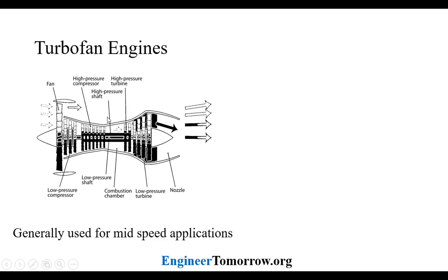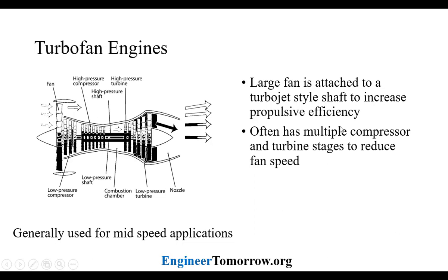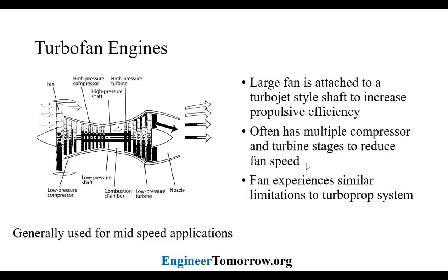There are two airstream sections of this engine. These are generally used for mid-speed applications — approximately Mach 0.8. You can think of large aircraft nowadays like the 787 and the Airbus A380, which use turbofan engines because they're very efficient at those velocities. They're not going supersonic, so this is the optimal engine for that scenario. A large fan is attached to a turbojet-style shaft to increase propulsive efficiency, and there are often multiple compressor and turbine stages to reduce that fan speed. There are similar limitations to the turboprop system.